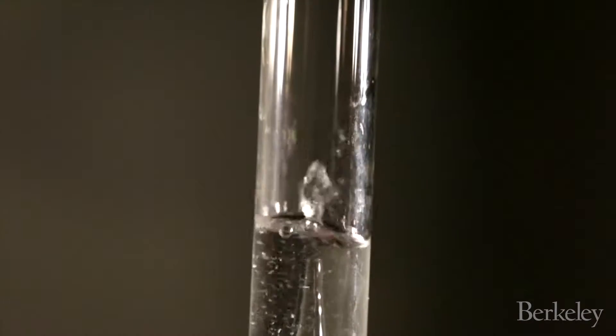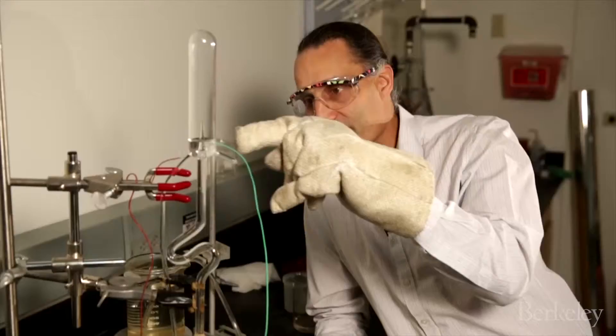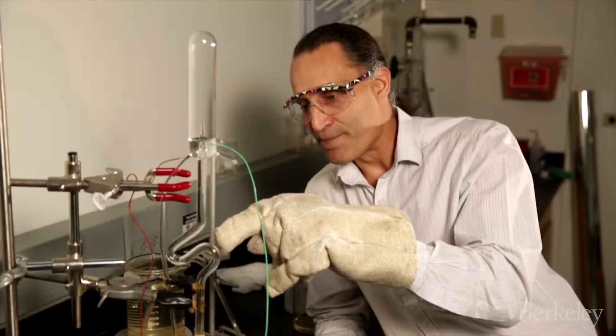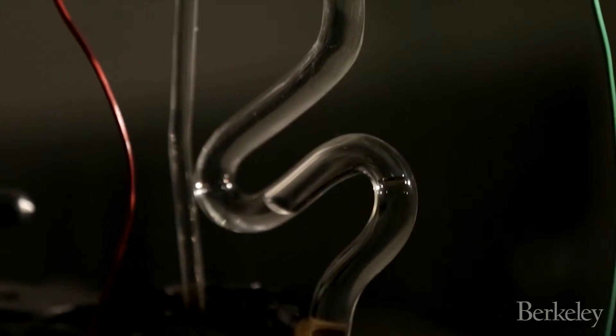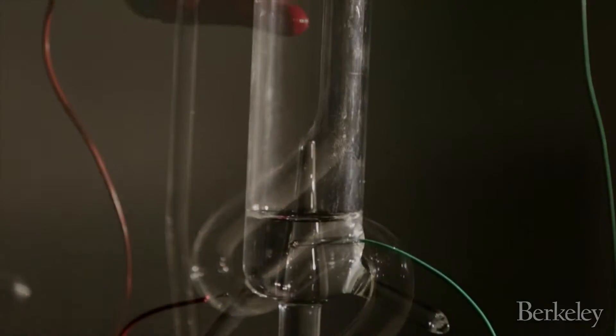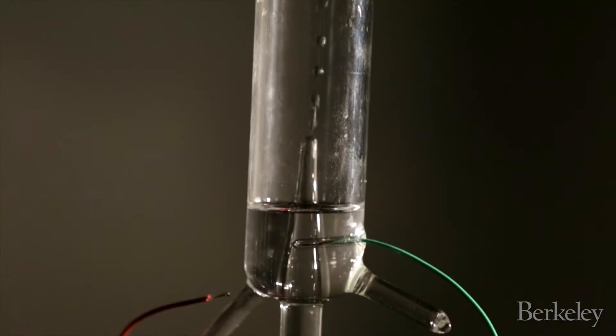When a big eruption happens, everything reaches a boiling temperature. Water at the top, water at the bottom. And as soon as the eruption begins, the pressure everywhere is lowered and the water turns into steam. And then we get a big eruption.